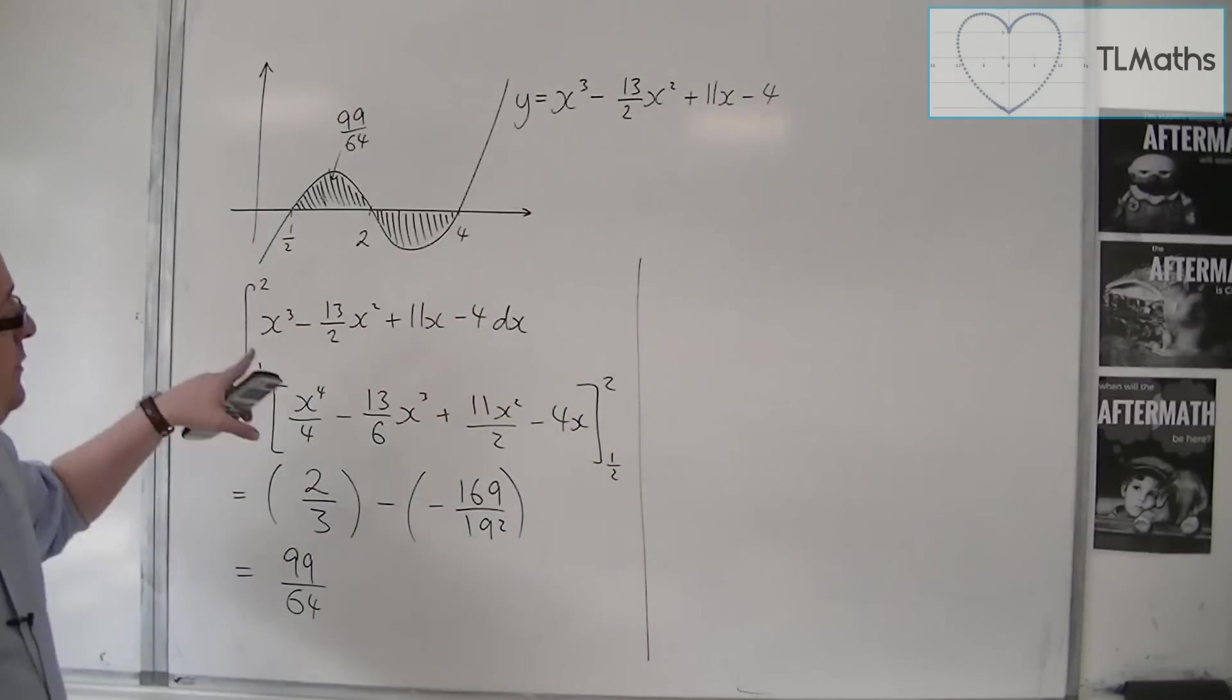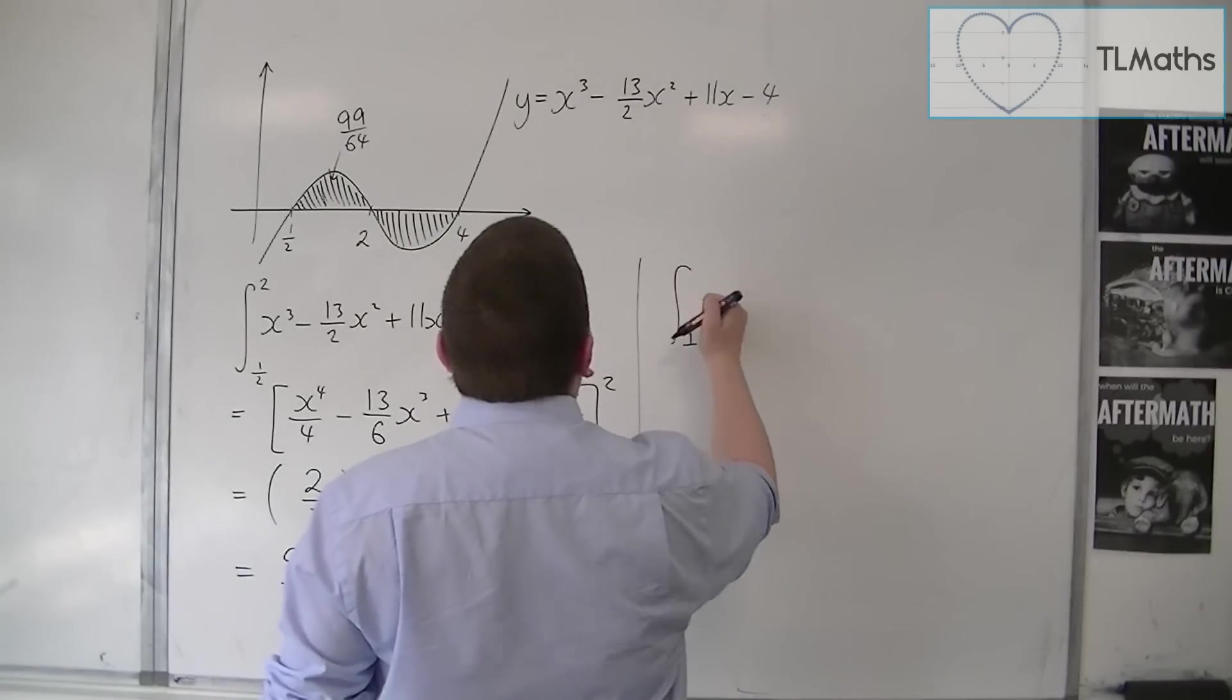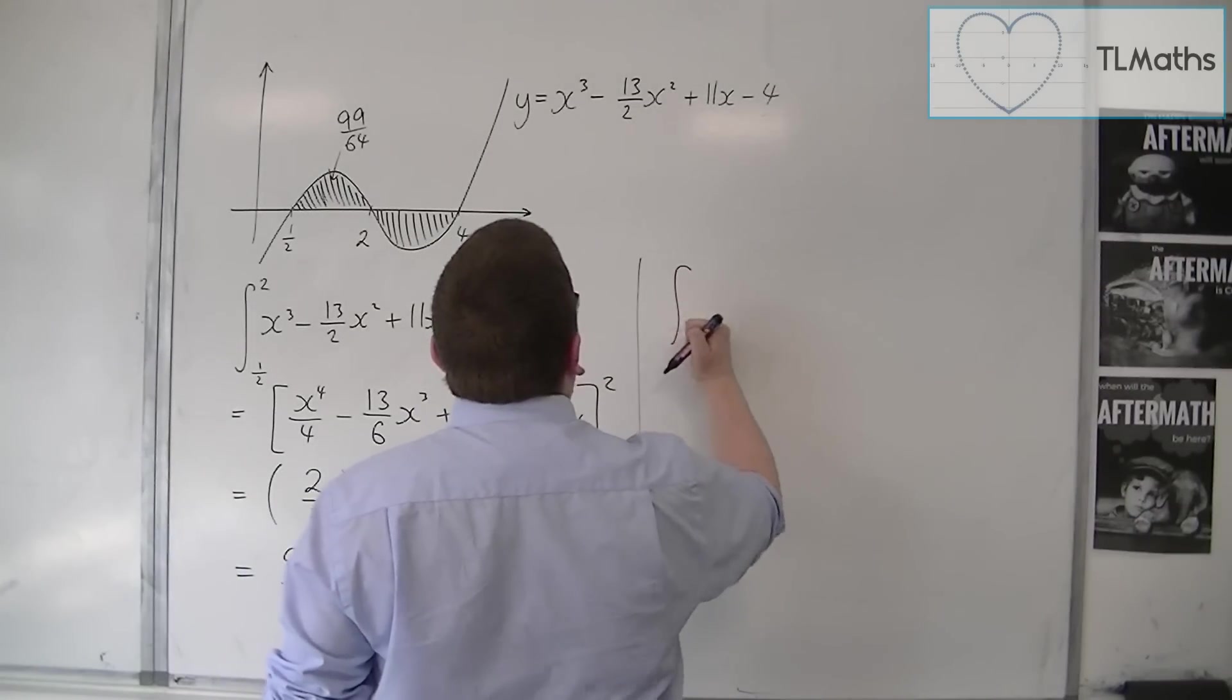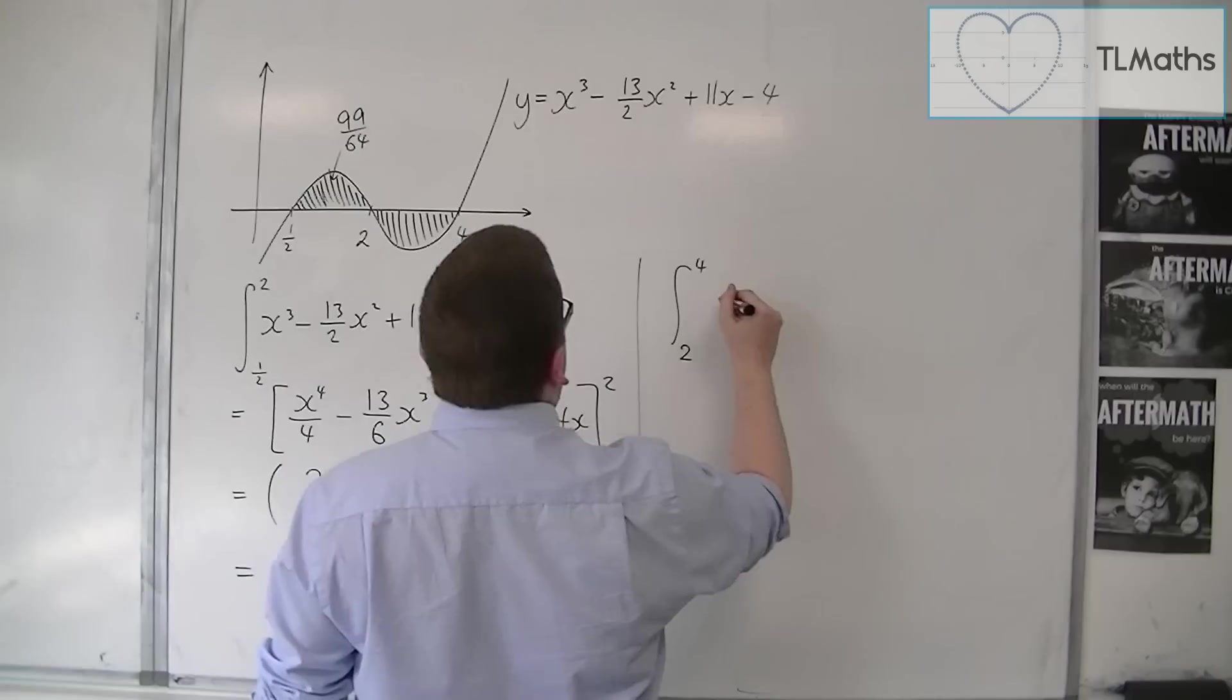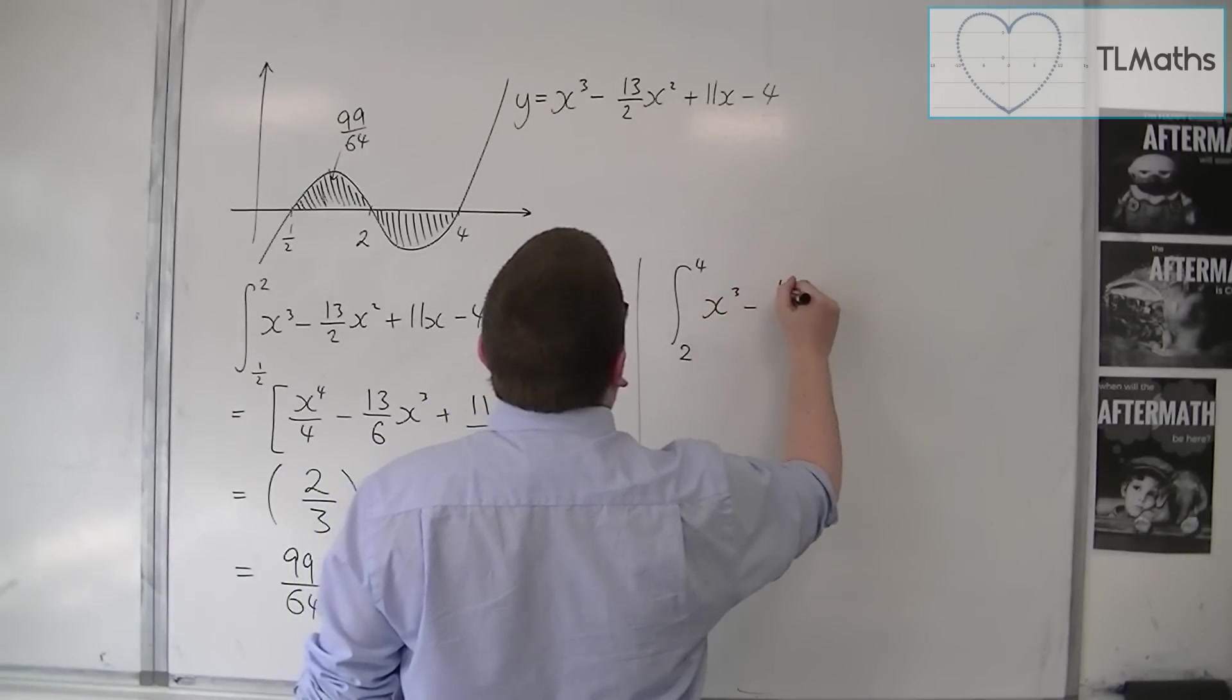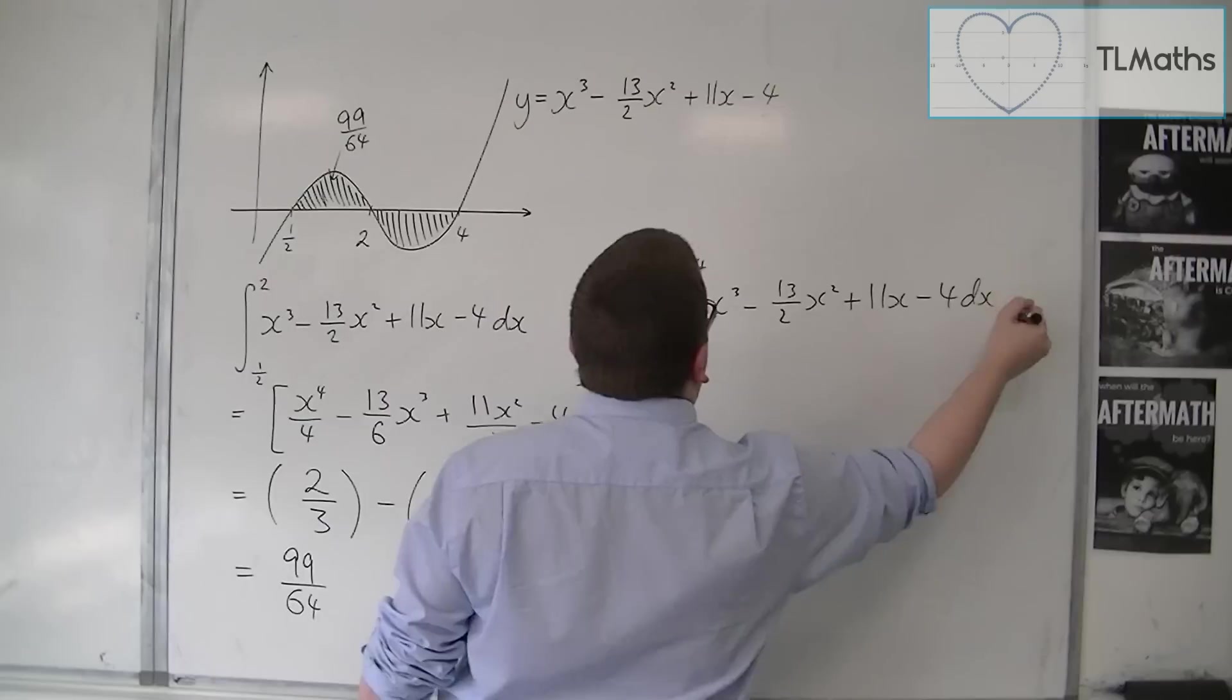Then I need to do the same, integrating, well not between 1/2 now, and we're going to be integrating between 2 and 4. This x³ - 13/2 x² + 11x - 4 dx.